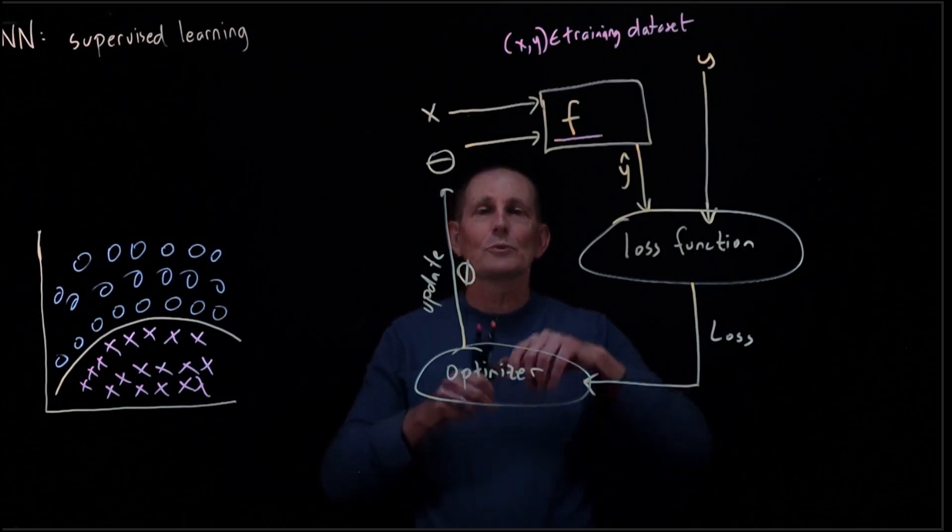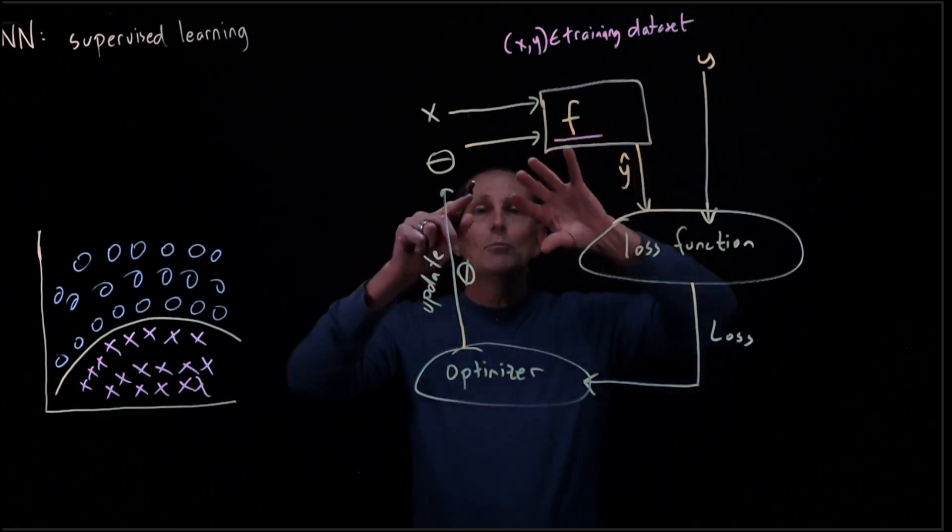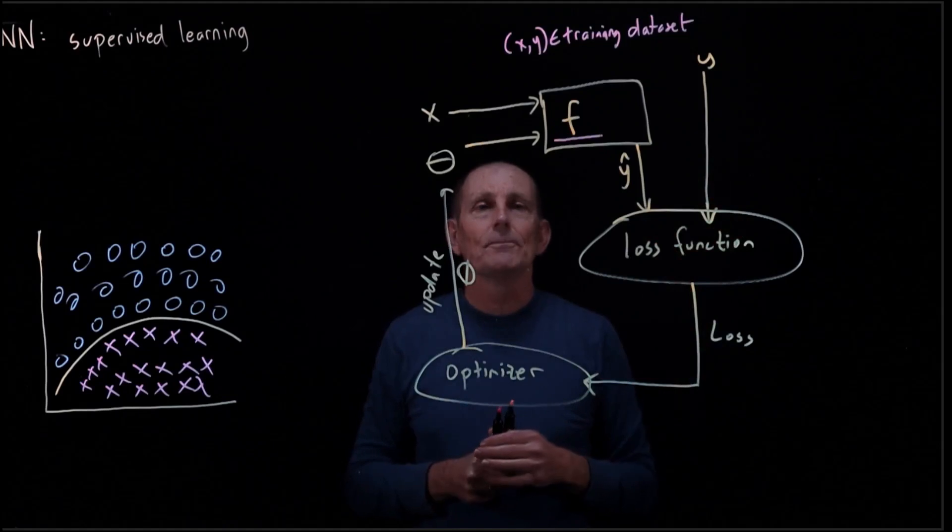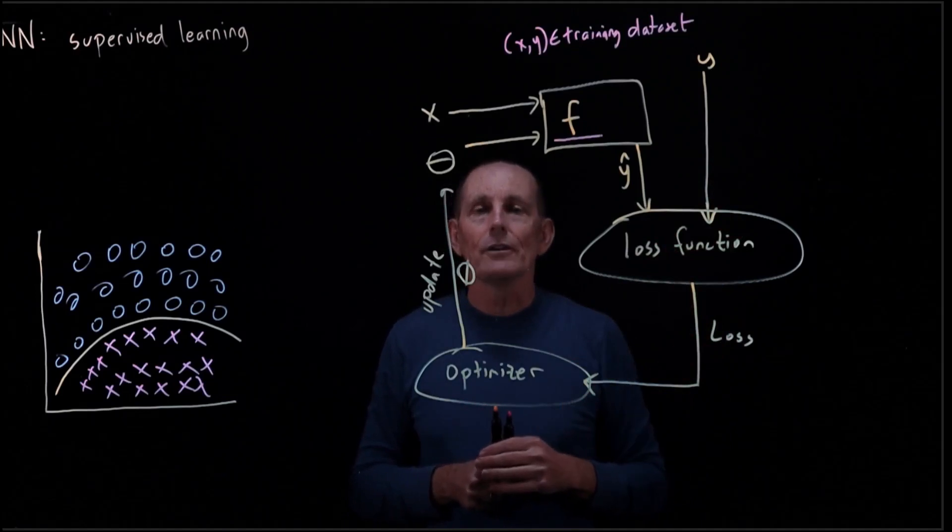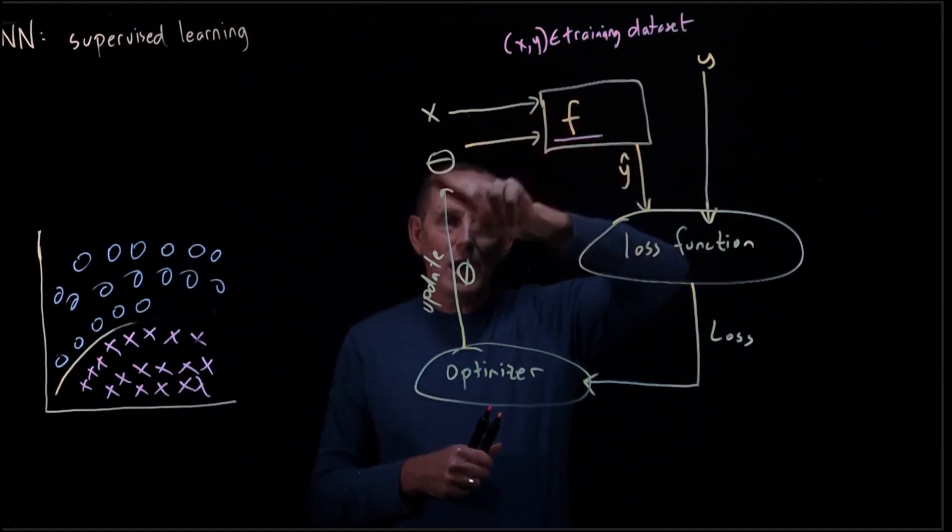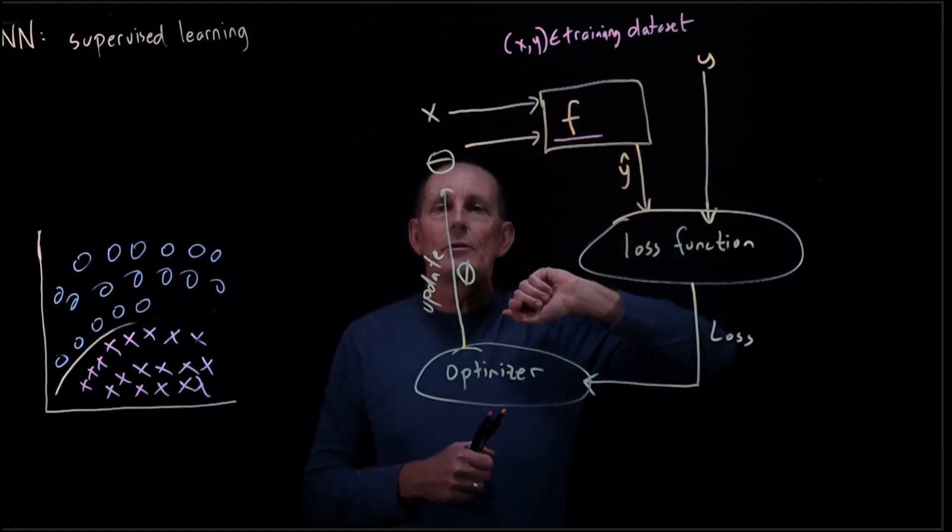So there's a lot of construction process that we're doing before we start the training process. And then we start the training and we should see the loss go down over time. This process is what we're going to be using with neural networks.